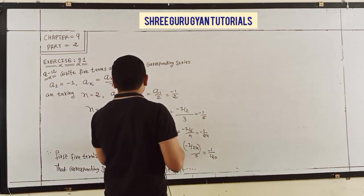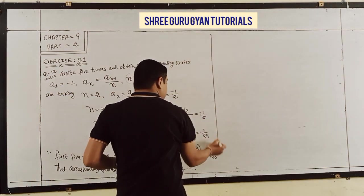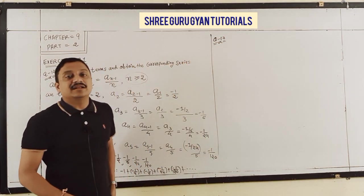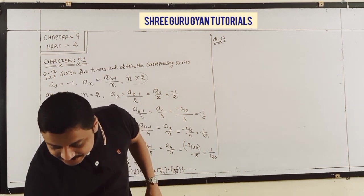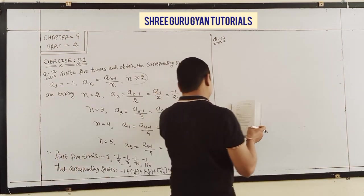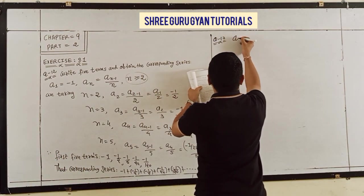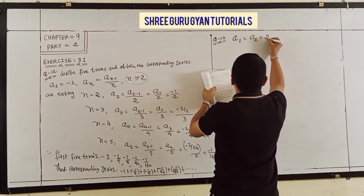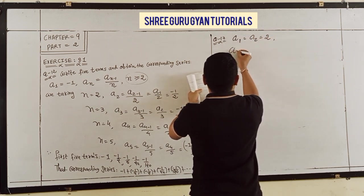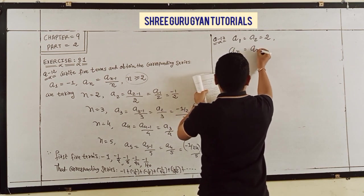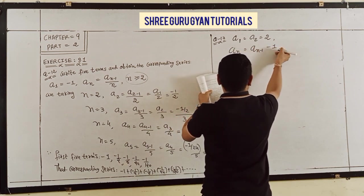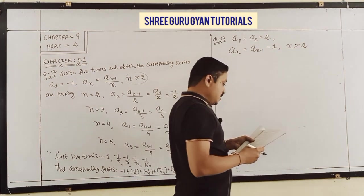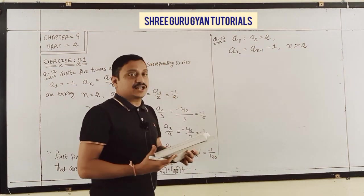Similarly, Question number 13: find the first 5 terms and corresponding series. Here a1 = a2 = 2, and an = a(n-1) minus 1 for n greater than 2. The condition defines n greater than 2, meaning you apply n = 3, 4, 5 since 1 and 2 are already given.